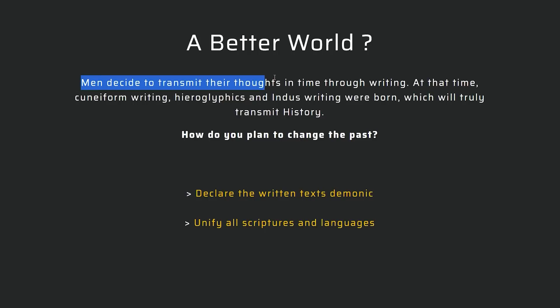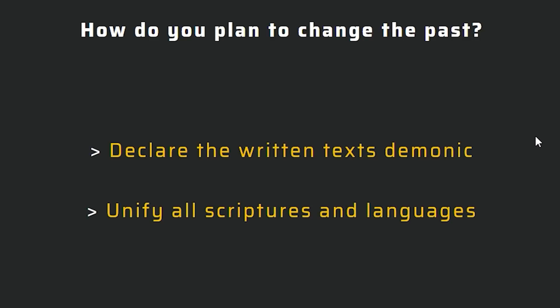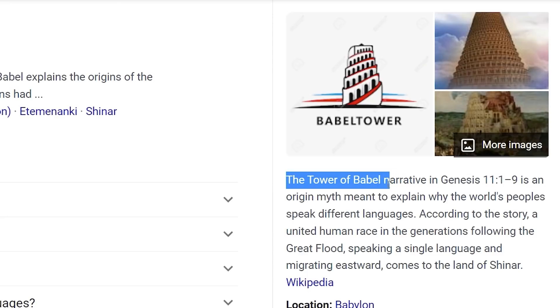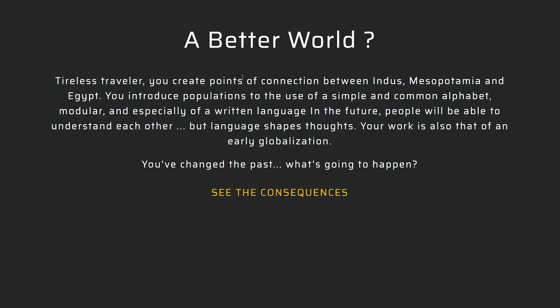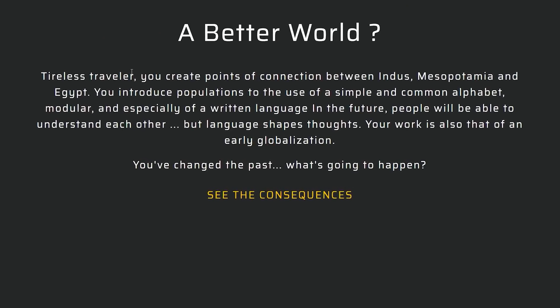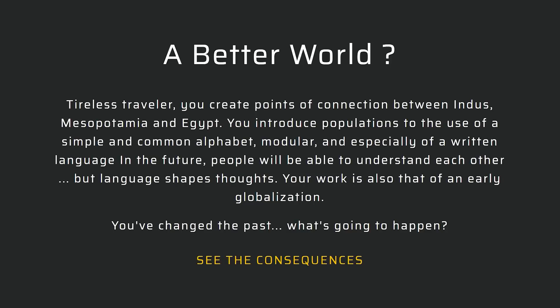Men decide to transmit their thoughts in time through writing. How do you plan to change the past? I can either declare the written texts demonic or unify all scriptures and languages. That's the Tower of Babel. We're going to construct that. Timeless traveler, you create points of connection between Indus, Mesopotamia, and Egypt. I've introduced the population to use a common alphabet and we've already begun to globalize the earth.